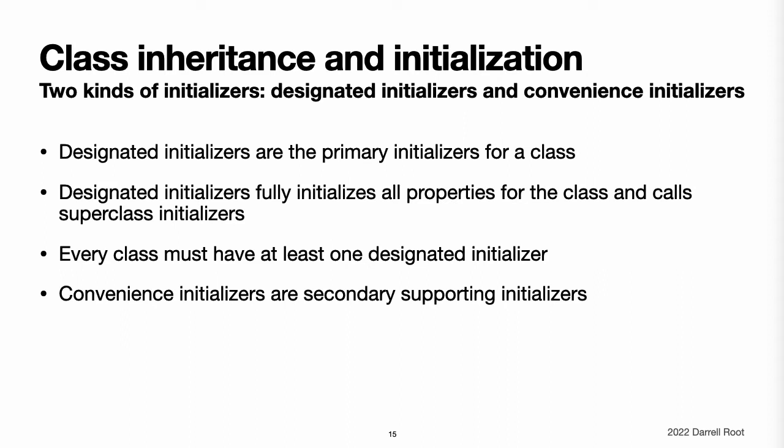In some cases, this requirement is satisfied by inheriting one or more designated initializers from a superclass. Convenience initializers are secondary, supporting initializers for a class. You can define a convenience initializer to call a designated initializer from the same class with some of the designated initializer's parameters set to default values. You can also define a convenience initializer to create an instance of that class for a specific use case or input value type. You do not have to provide convenience initializers if your class does not require them. Create convenience initializers whenever a shortcut to a common initialization pattern will save time or make initialization of the class clearer in intent.